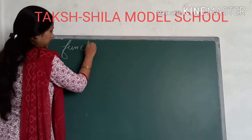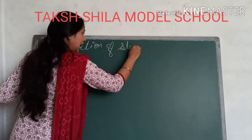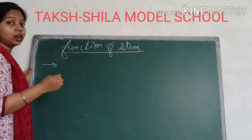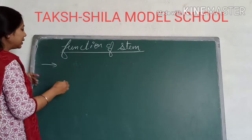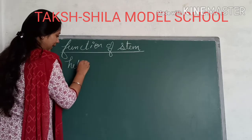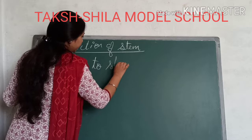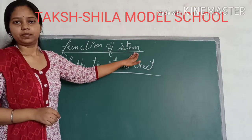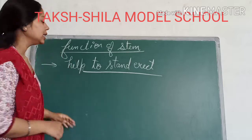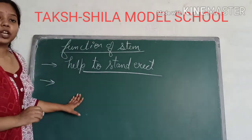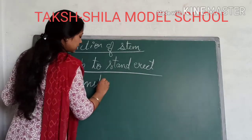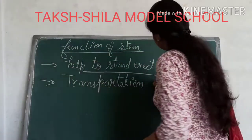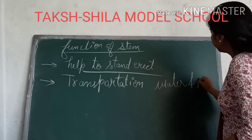Functions of stem: First, it helps the plant to stand erect — to keep the plant straight and upright, holding it in position. The second function is transportation — transportation of water and minerals.